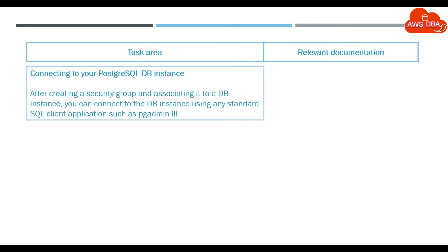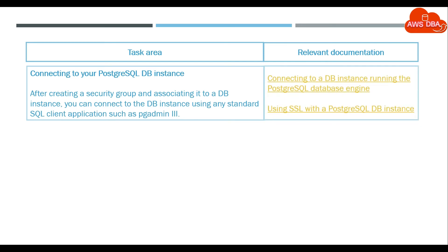Connecting to your PostgreSQL DB instance. After creating a security group and associating it to a DB instance, you can connect to the DB instance using any standard SQL client application such as pgAdmin 3. See: Connecting to a DB instance running the PostgreSQL database engine, and Using SSL with a PostgreSQL DB instance.